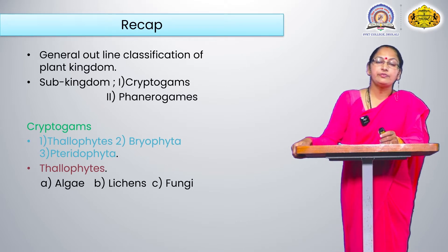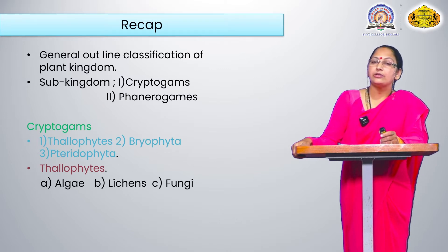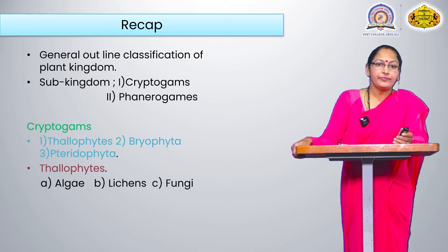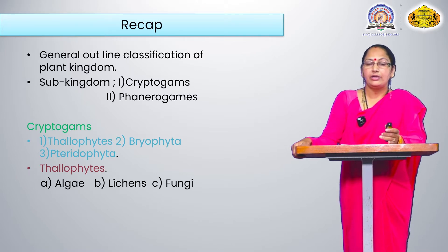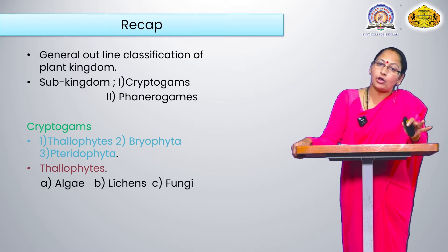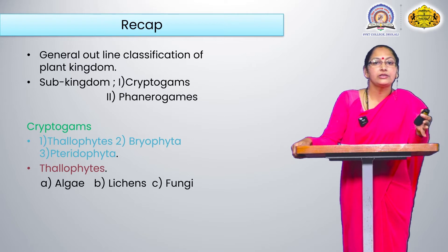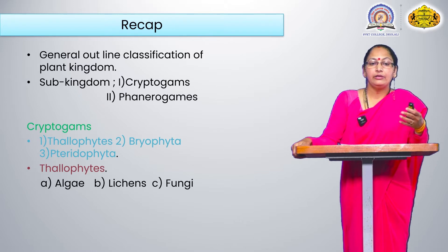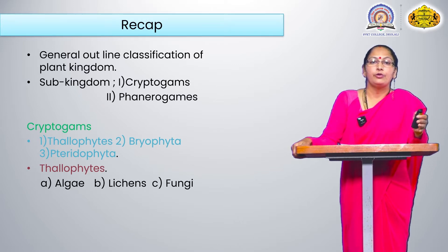Thallophytes means the entire plant body is thalloid in structure — it is not well developed into leaf, stem, and roots. That's why it is called thallophytes. All three classes are thalloid in nature. In today's lecture, we focus on the algae.